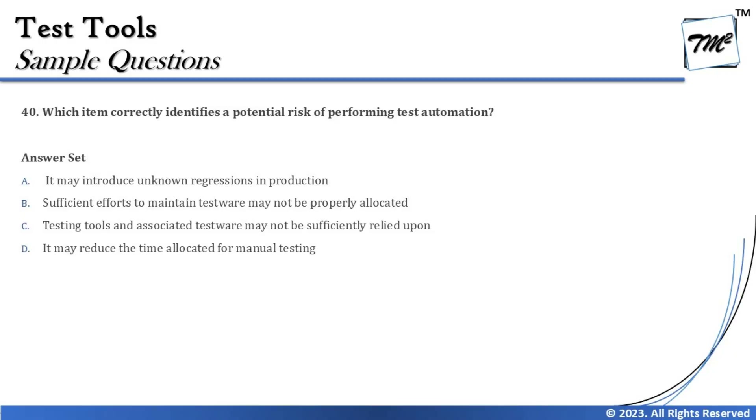Option A says it may introduce unknown regression in production. A change in code or environment introduces regression, but an automation testing tool is useful for doing regression testing — it does not introduce regression in the system, whether in production or before release. So automation tools do not introduce side effects in a system. We can rule out option A.